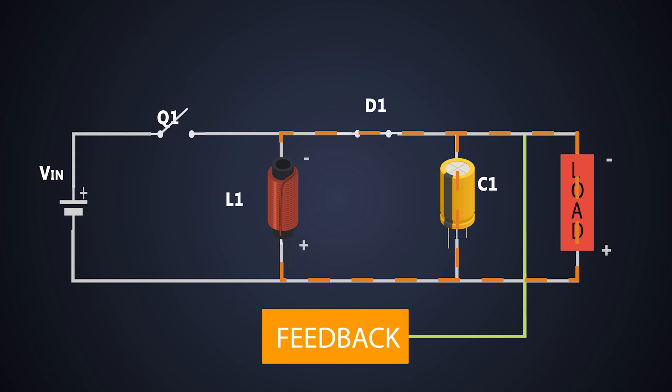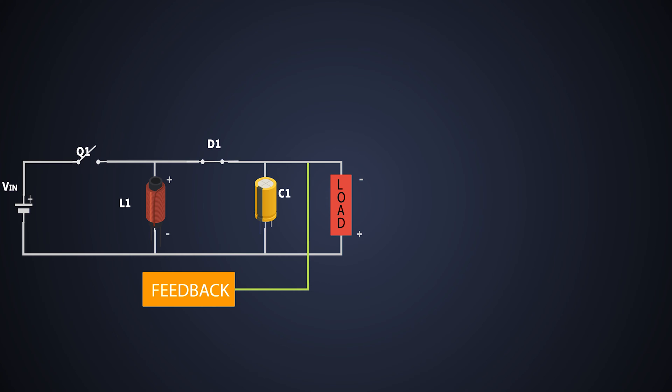And this inductor provides the voltage to the output load. But this is an inverting direction. The capacitor connected here filters out the ripple present in the supply. Well, let's understand the working of this converter with waveforms.